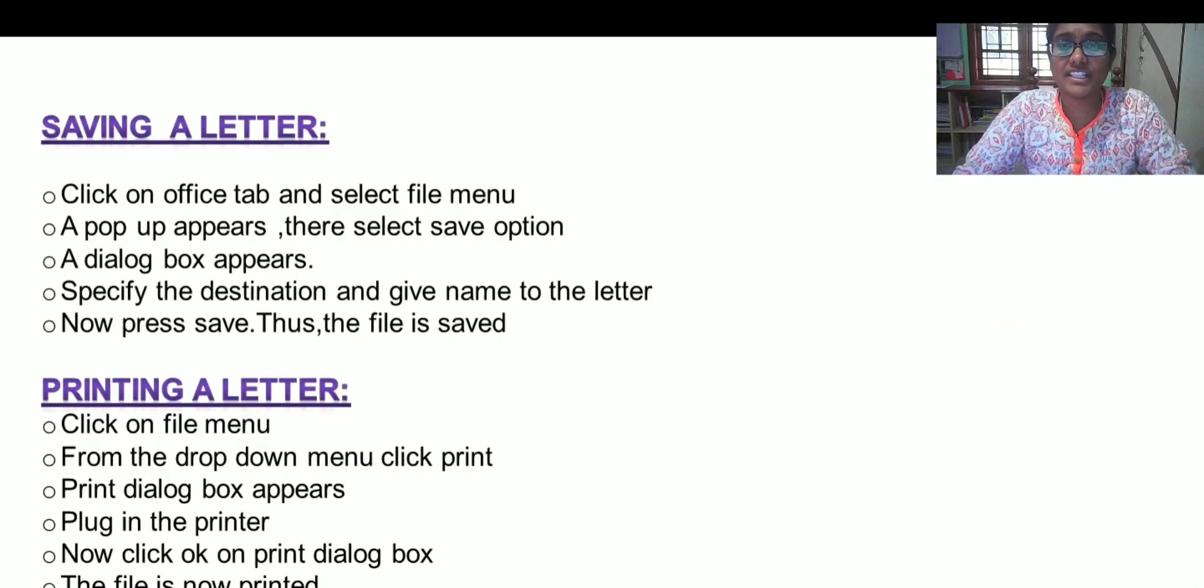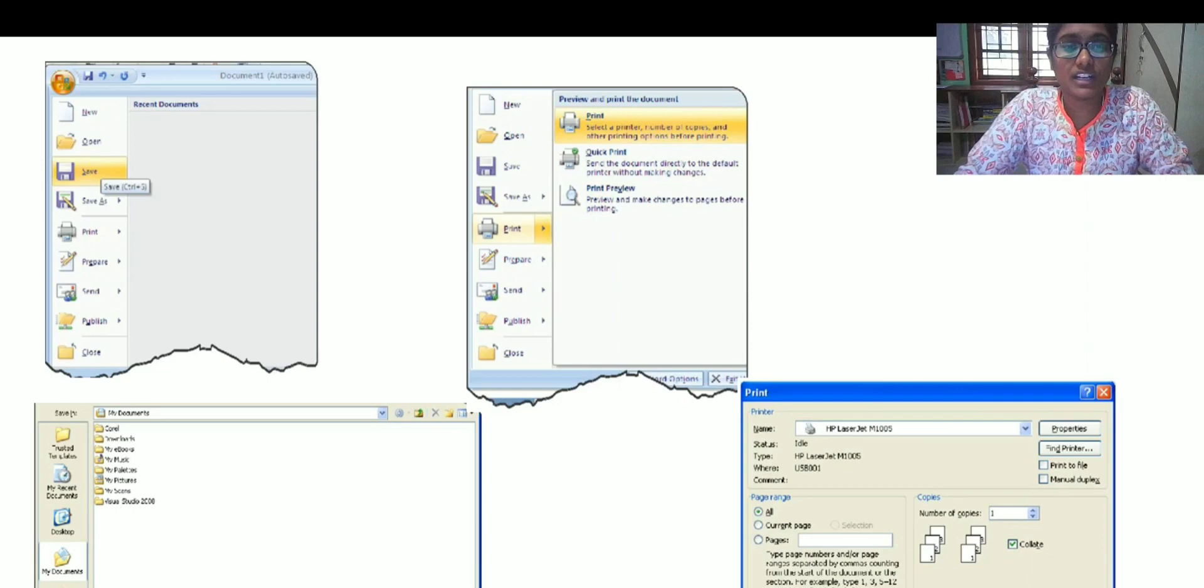Now let us study about saving and printing a letter or a document. How do you save a document? Click on the office tab. Go to file menu. A pop-up appears. There select save. Also specify the location where you are supposed to save it. Then give a name to your file and press save. That is how it works.